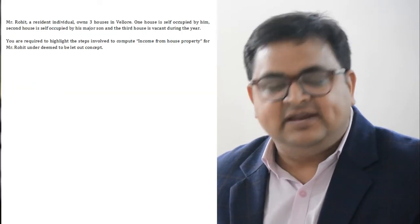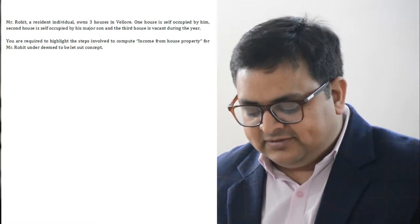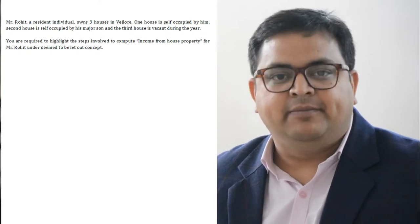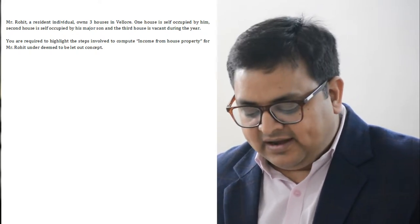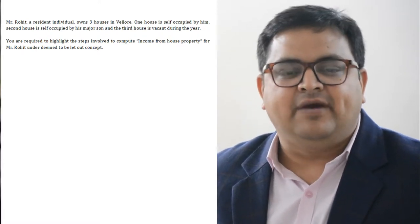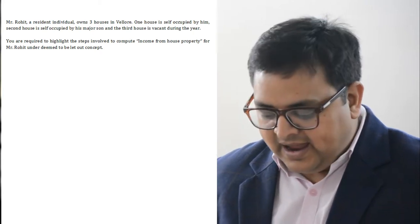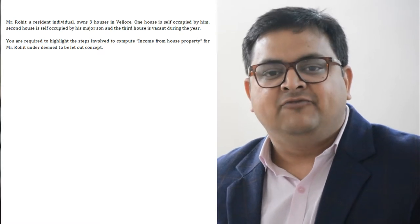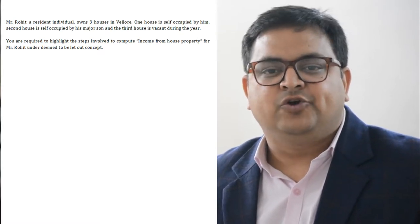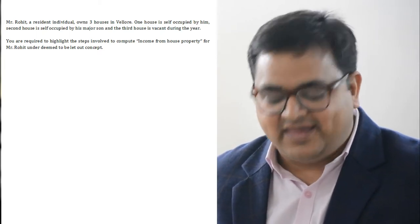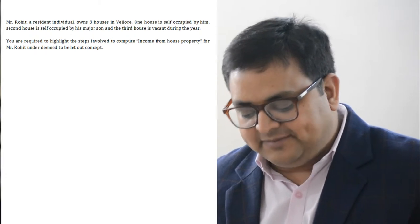It is again an easy question. It says Mr. Rohit, a resident individual, owns three houses. One house is self-occupied by him, the second house is self-occupied by his major son — so that is also self-occupied by family members — and the third house is vacant during the year. So he has three houses: one self-occupied by himself, second self-occupied by family members, and the third one is vacant.